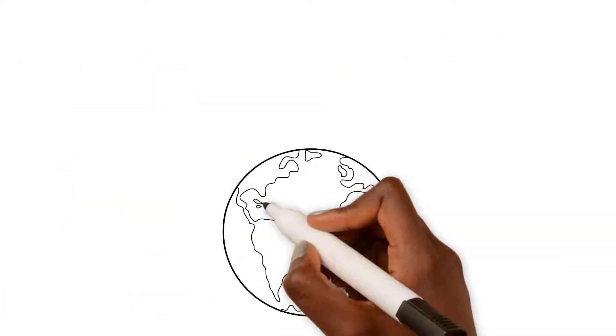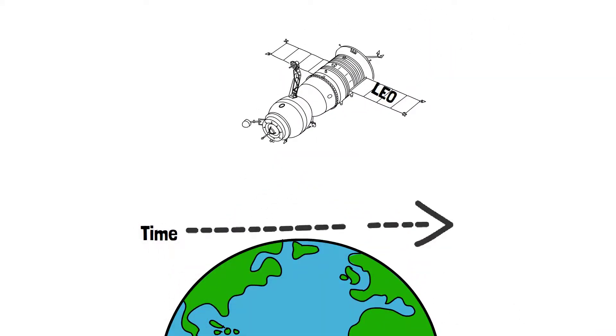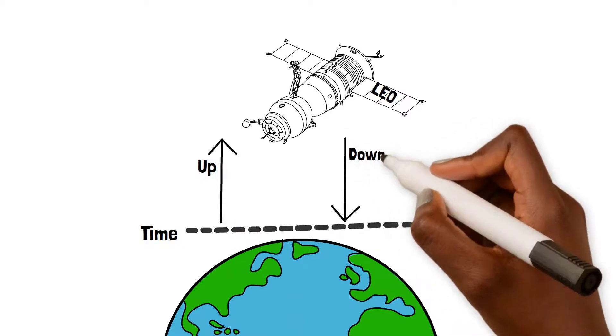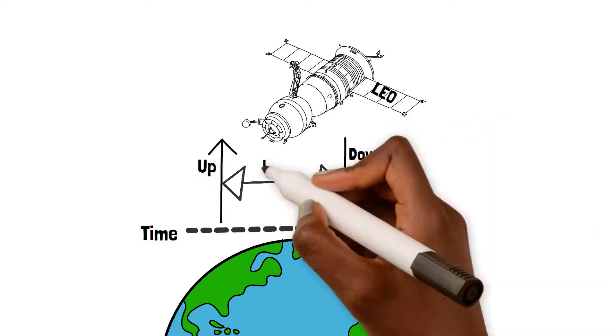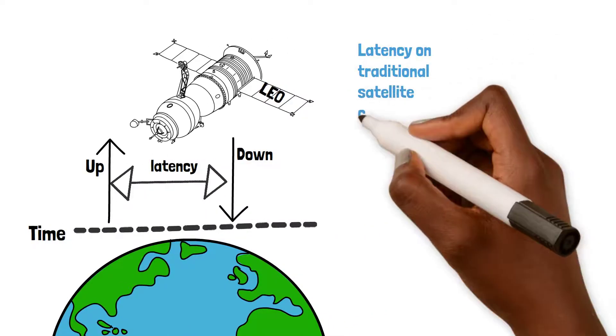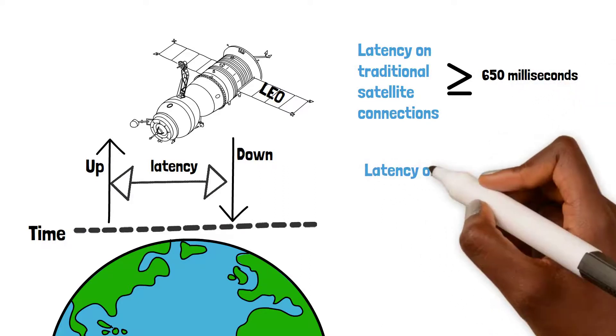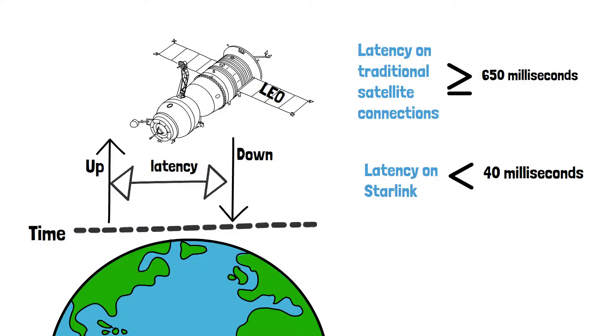But the real clincher is number two: the latency. Because LEOs are stationed so low to the ground, they cut down the time it takes for your message to reach the internet and back. That's typically referred to as latency. On traditional satellite connections, latency is usually 650 milliseconds, possibly even more. Starlink users will experience latencies of less than 40 milliseconds. Remarkably, that's less than a third of the latency that users of a terrestrial link in, say, Cape Town would experience.